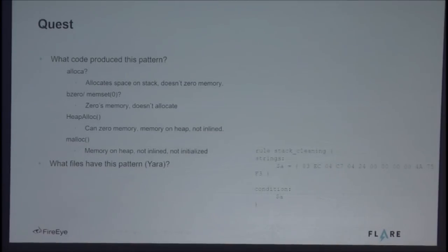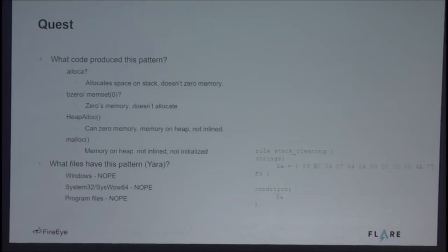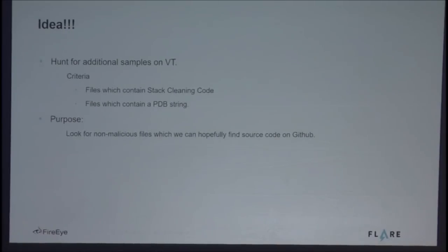What I can do is ask: what files have this pattern? I'll make a YARA rule to go look for this. I can take the stack cleaning code I showed in IDA with those instructions, take the associated opcode bytes — the machine code bytes — and make a YARA rule out of those to search for that pattern. My Windows directory — no files have that pattern. Program Files — nothing. System32 — nothing. SysWOW64 — nothing. So I have an idea: I'm going to go hunt for additional samples on VirusTotal, but I want non-malicious samples where I could potentially find source code.